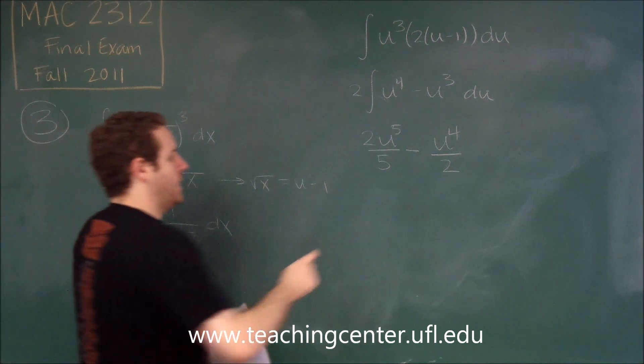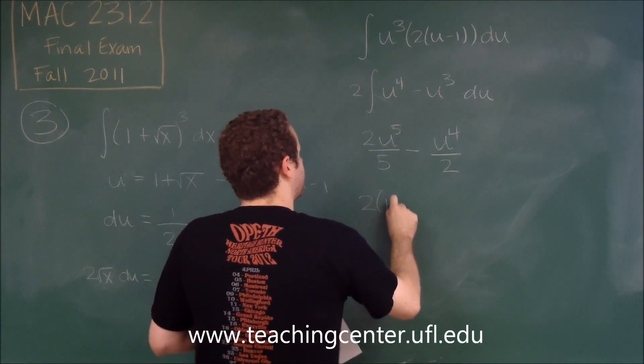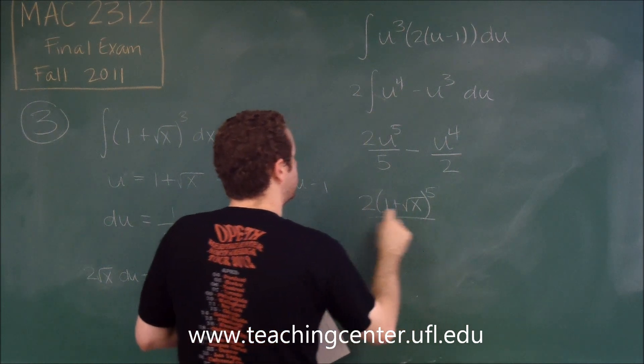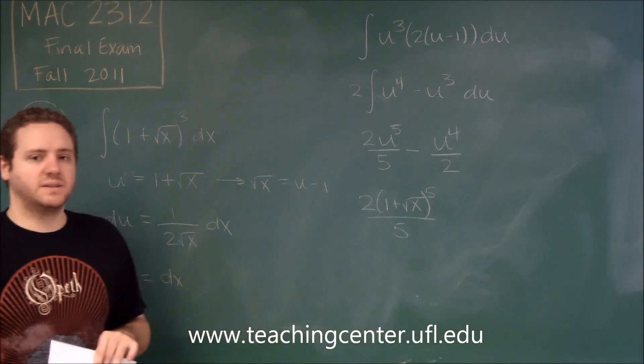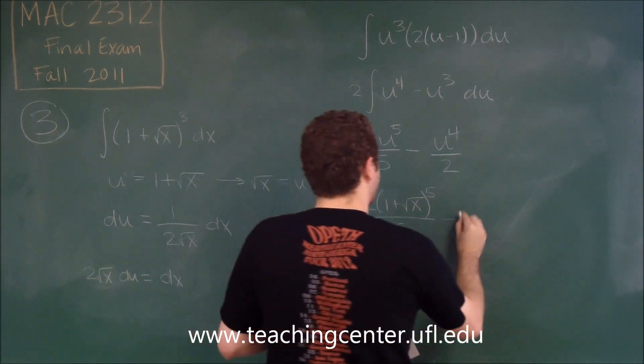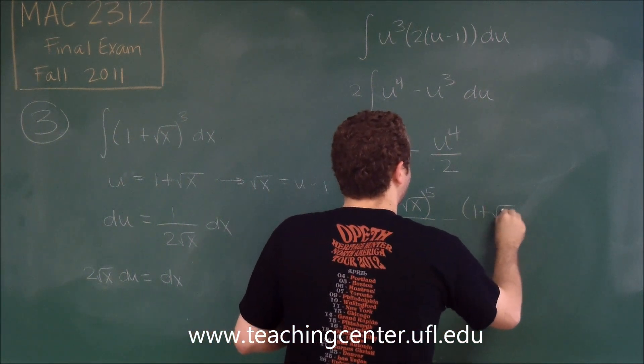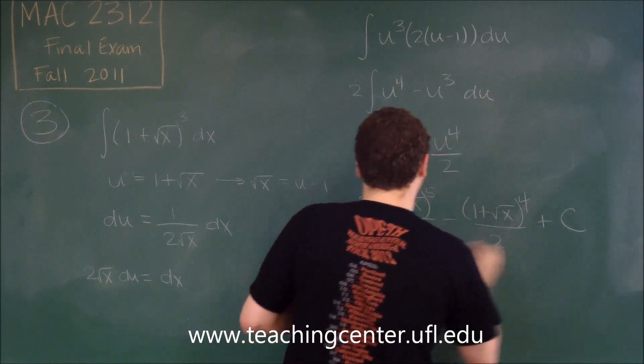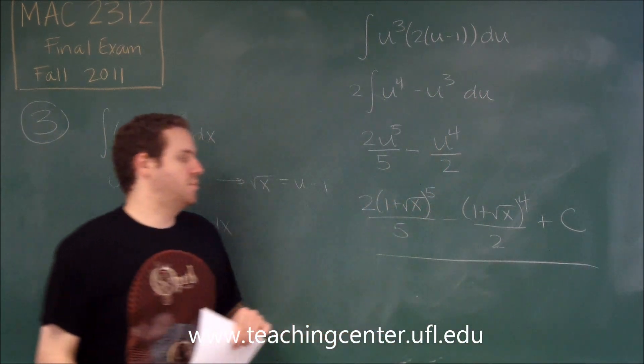So finally we can just plug back in what we substituted for u in the first place. So we get two times one plus square root of x to the fifth all over five minus one plus square root of x to the fourth over two plus c.